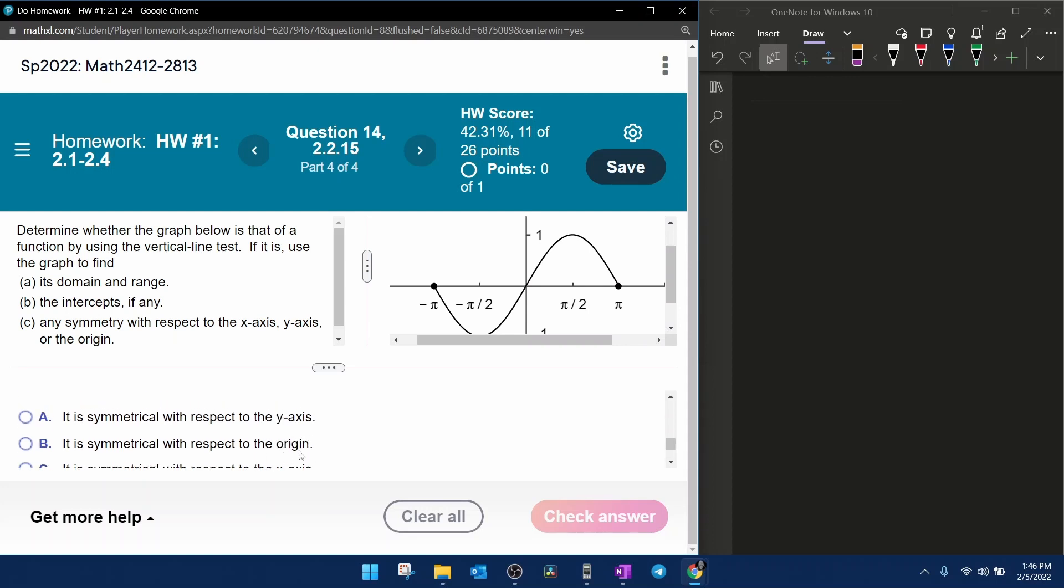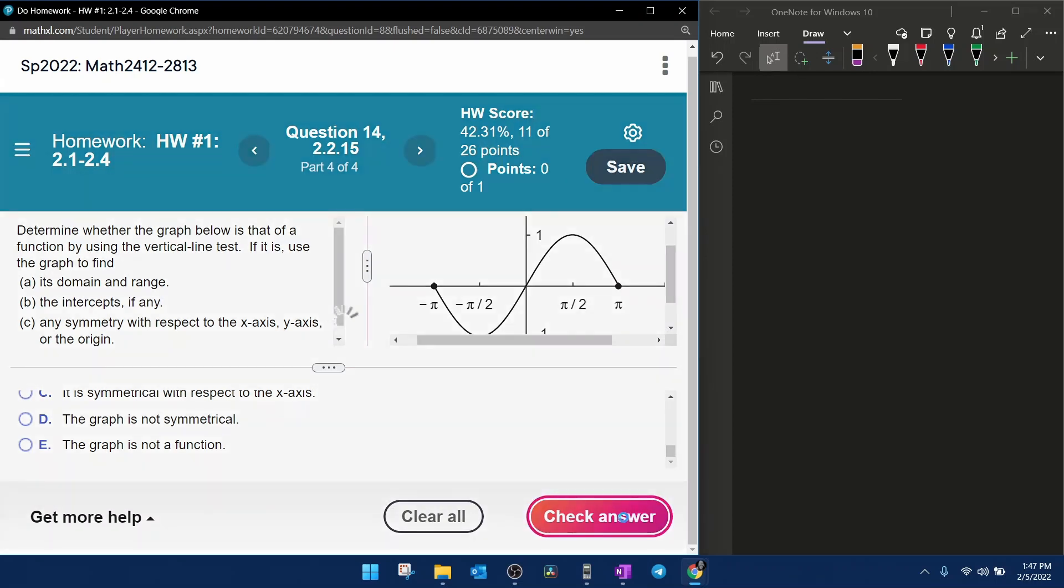Origin symmetry is rotational symmetry. So if we take this piece of the graph and rotate it about the origin 180 degrees, it would lay on top of this piece of the graph. So this graph does have origin symmetry because the piece in the first quadrant will rotate 180 degrees and is replicated in the third quadrant. And I believe that is the only symmetry that this graph has is origin symmetry.